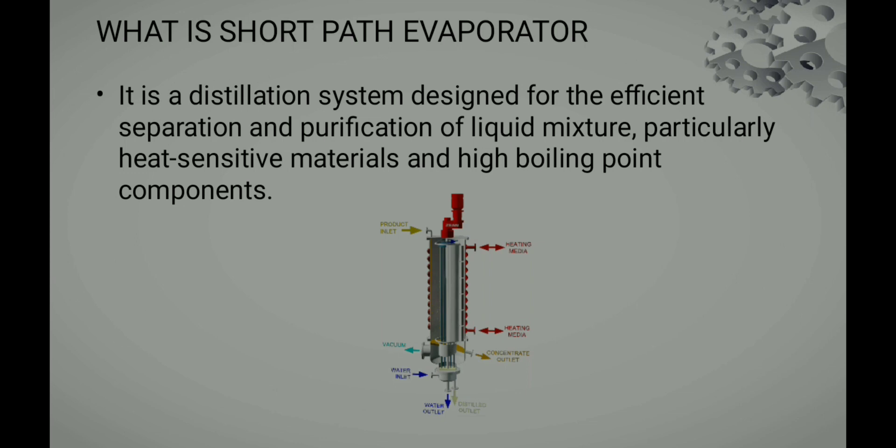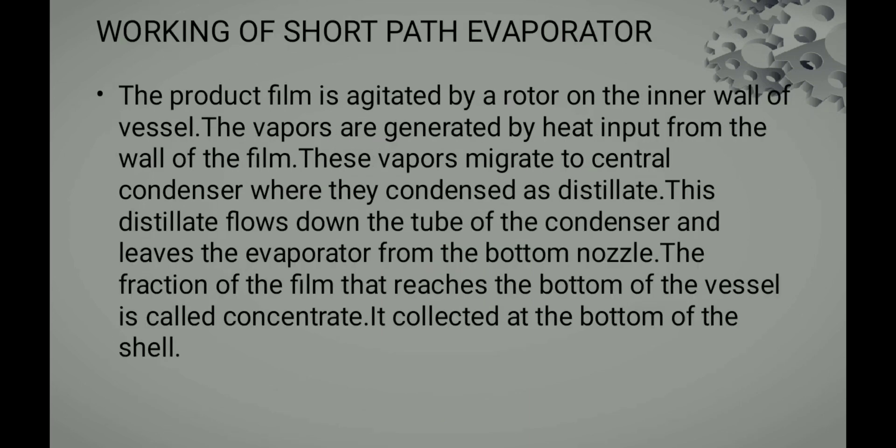Let us see the parts one by one. On the top we have a dryer motor, and on the bottom we have a product inlet. On the outer surface we have a heat inlet and heat outlet. At the bottom we have a concentrated outlet, and on the side we have a vacuum. At the bottom we also have a distillate outlet, and we have a water inlet and water outlet for condensation.